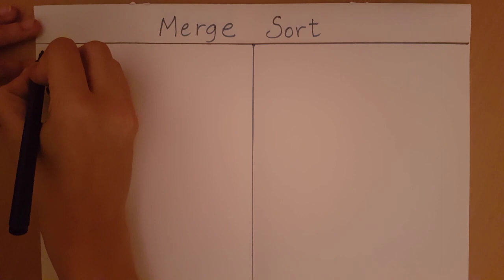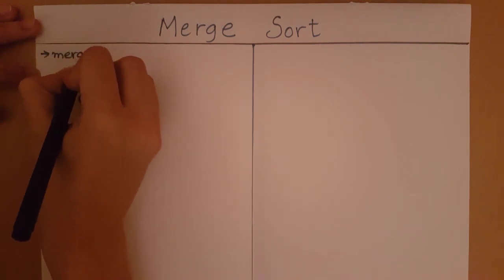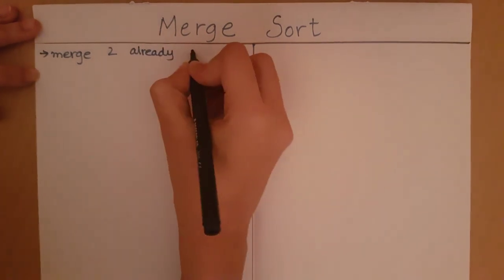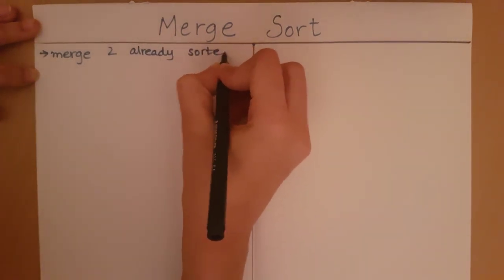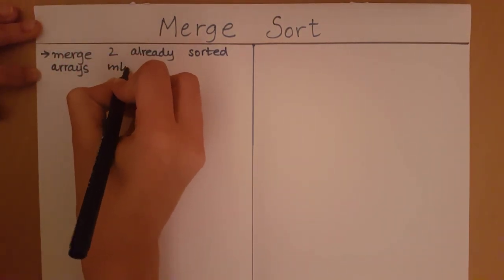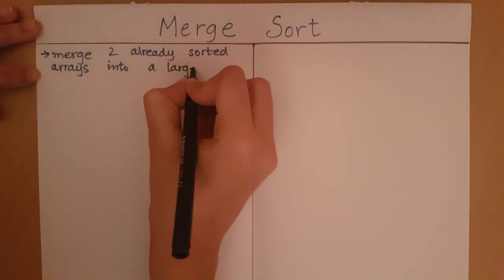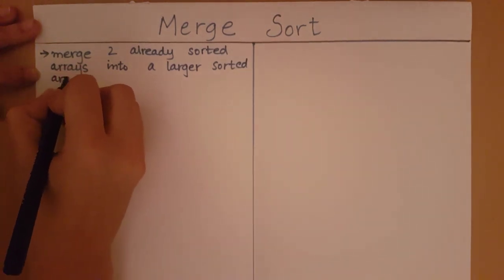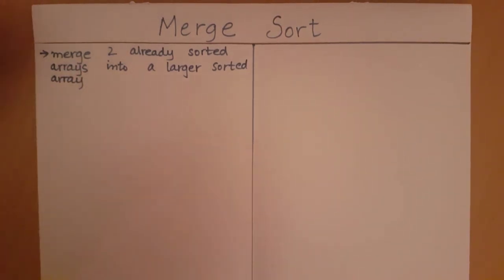So first, what are we going to learn? How to merge two already sorted arrays into a larger sorted array. I have two arrays which are already sorted. I want a bigger array which has all the elements of these two arrays and that bigger array should also be sorted. So, let's see how we are going to do this.